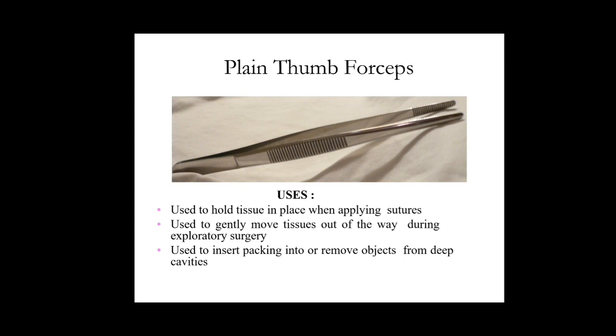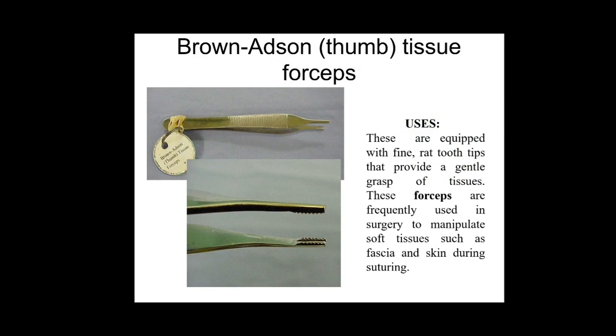The next one is the Brown-Adson tissue forceps. It has fine, serrated tooth tips that provide a gentle grasp of the tissue. These forceps are frequently used in surgery to manipulate soft tissue such as fascia and skin during suturing. This is another type of tissue forceps having fine tooth-like tips that help to hold the tissues.